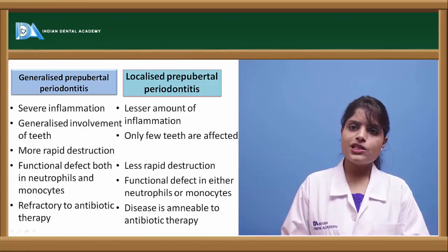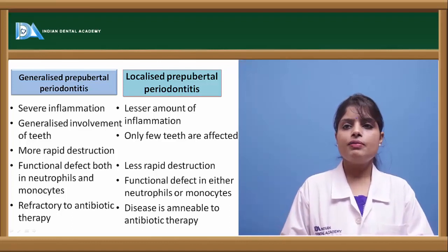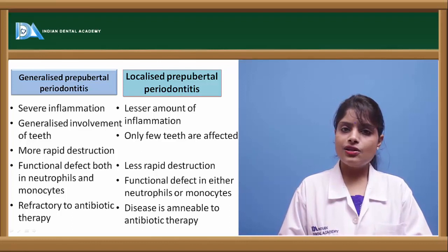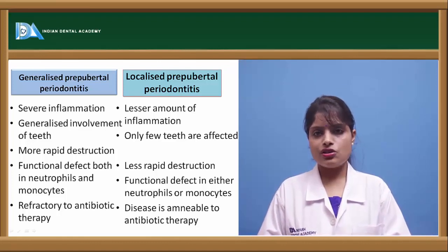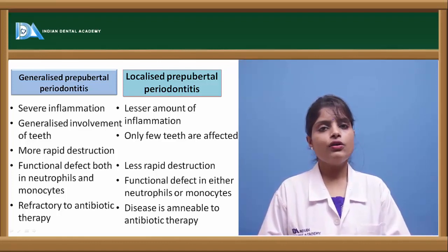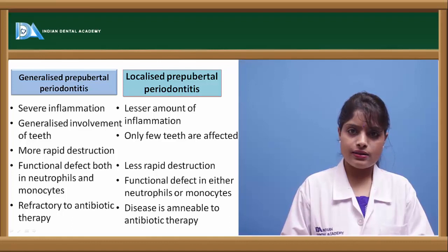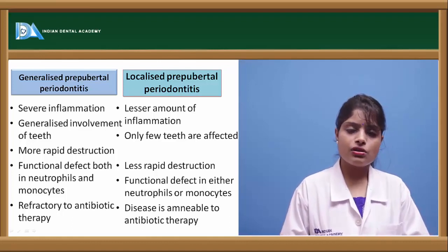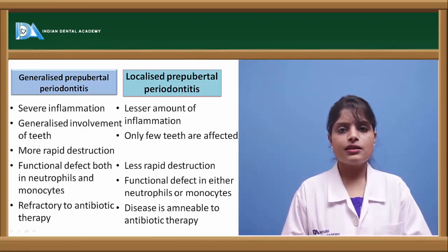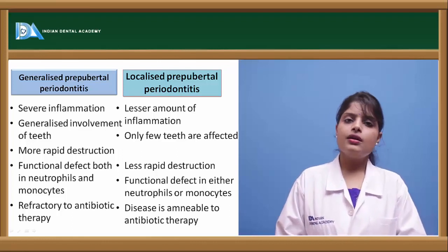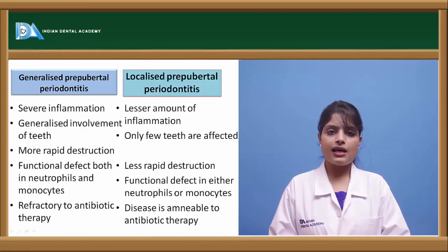In generalized prepubertal periodontitis, severe inflammation is seen with involvement of all teeth, more rapid bone destruction, and a functional defect in neutrophils and monocytes. In localized prepubertal periodontitis, lesser inflammation is seen and only a few teeth are involved. Generalized periodontitis is generally not amenable to antibiotic therapy, unlike the localized type.